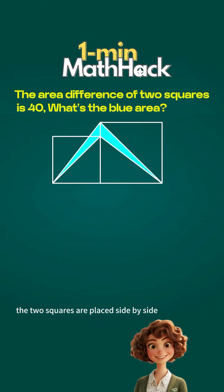The two squares are placed side by side. The large square's area is 40 more than the small square's. We need to find the blue area.